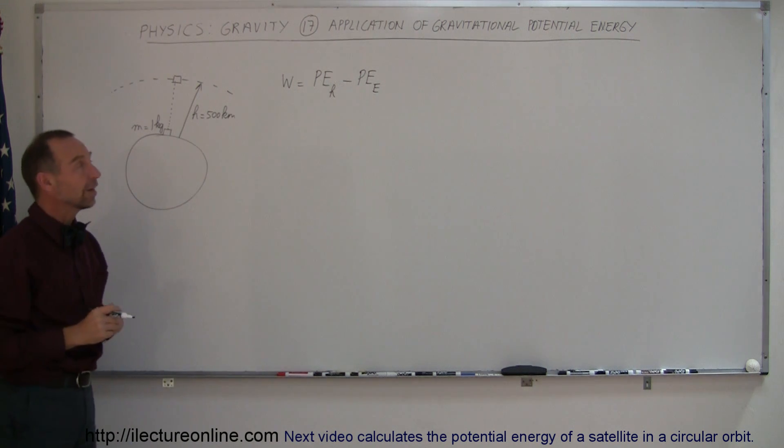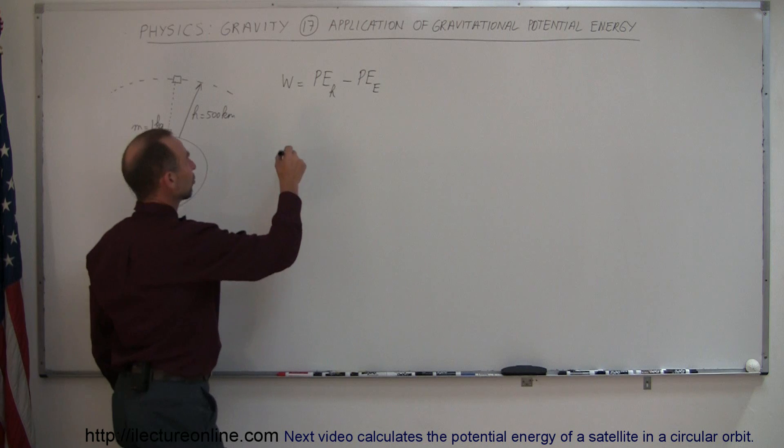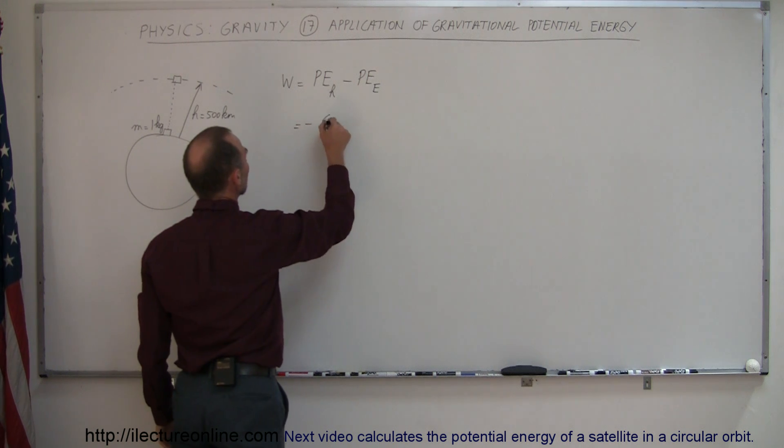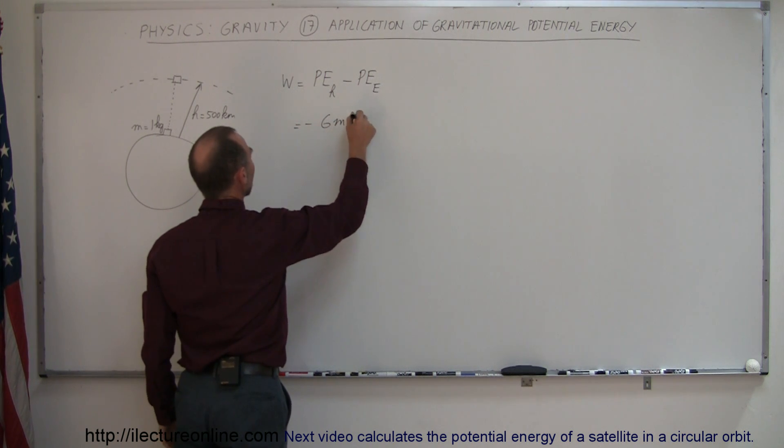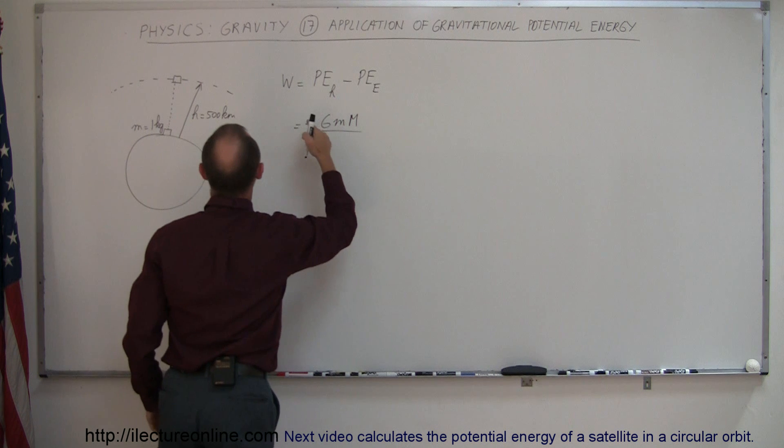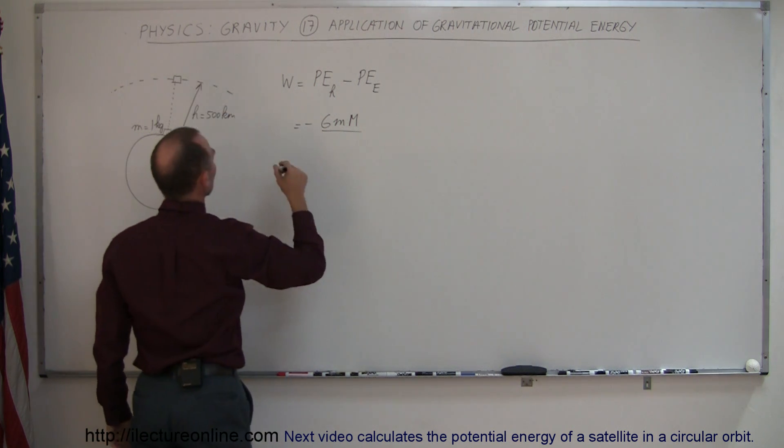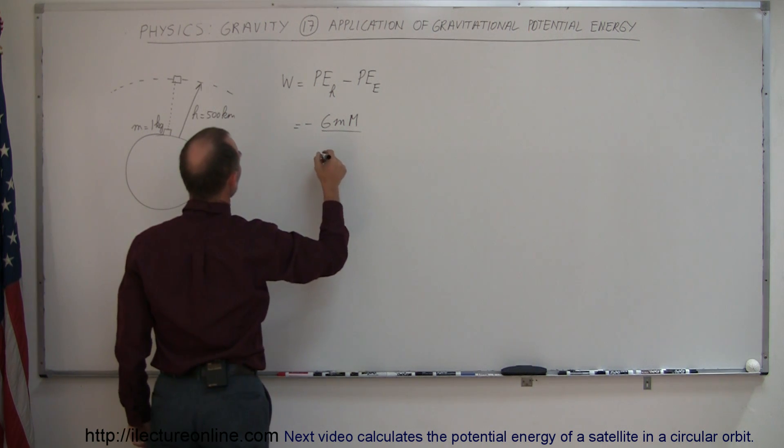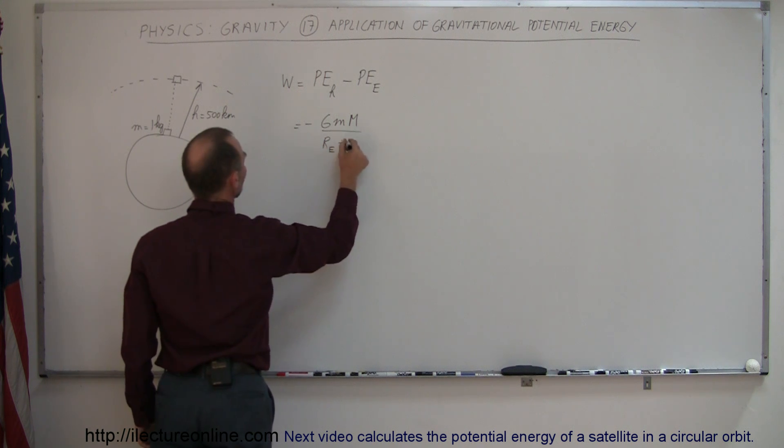Okay, so what is the potential energy at this height? Well, the definition is it is minus GmM divided by the position of that, which would be equal to the radius of the Earth plus the height.